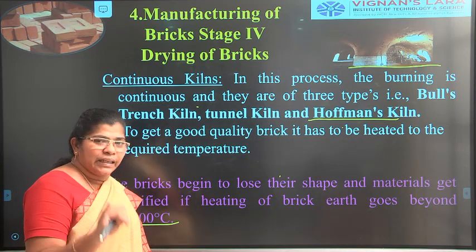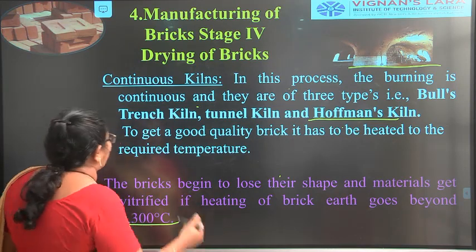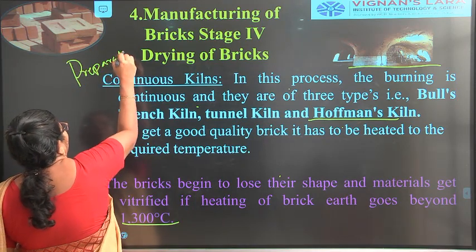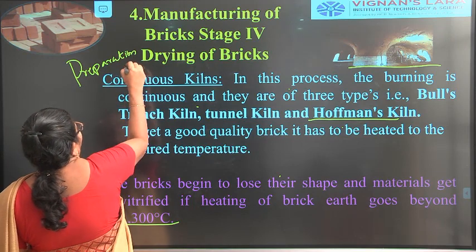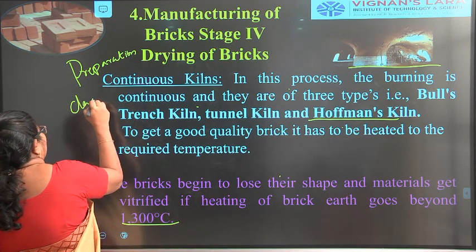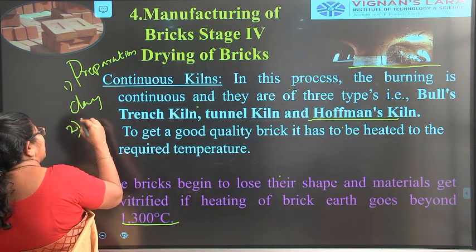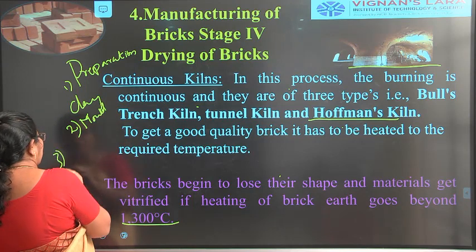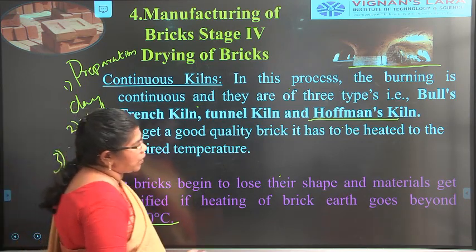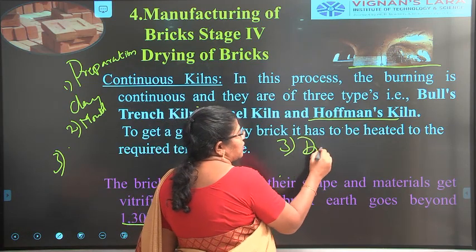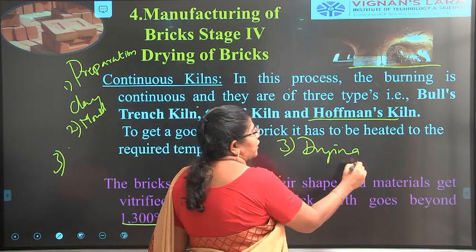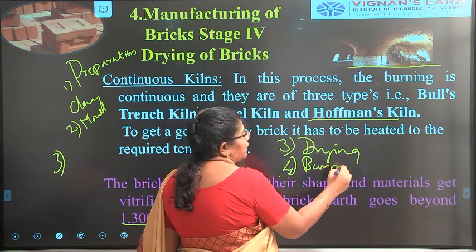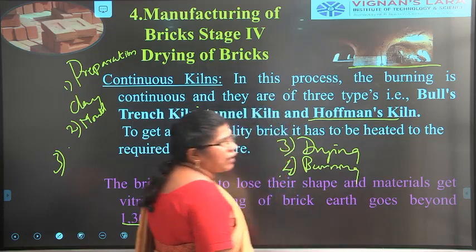To summarize the four manufacturing steps: first is preparation of clay, second is the molding process, third is the drying process — either in sunlight or controlled temperature — and fourth is the burning process, after which bricks come out with the required properties.